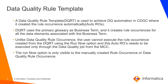Unlike the data quality rule occurrences, the user cannot run the auto ROs created by the rule template through the run now option. These auto ROs can only be executed through the data quality job from MCC. The run now option applies only to the manually created rule occurrence in CDGC, also called as data quality rule occurrence.